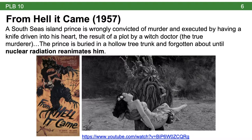The next movie is called From Hell It Came, from 1957. The premise is that an island prince is wrongly convicted of murder and executed by having a knife driven into his heart — and that knife is important. It turns out this was all a plot by a witch doctor on the island who was the true murderer.